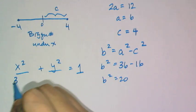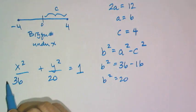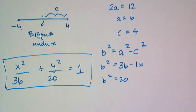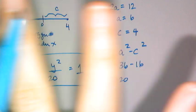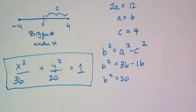The foci are horizontally aligned, so the bigger number, 36, goes under x and 20 goes under y. Instead of doing this in 20 steps using the definition, by remembering the relationship between a, b, and c, this is all the work needed to find the equation for that ellipse.